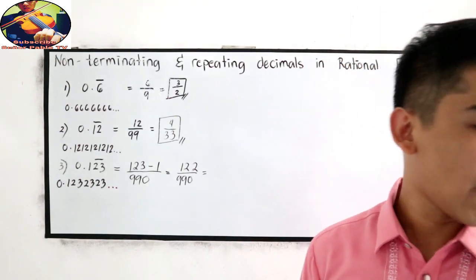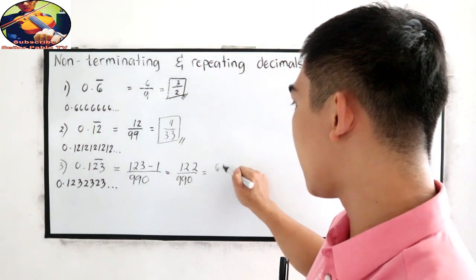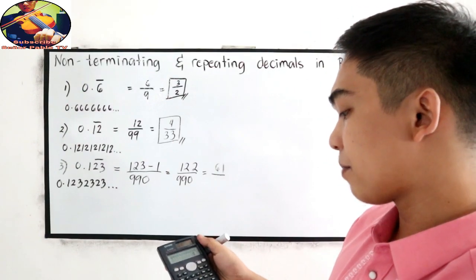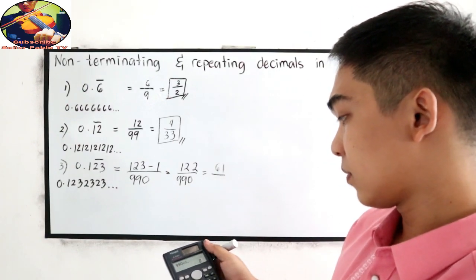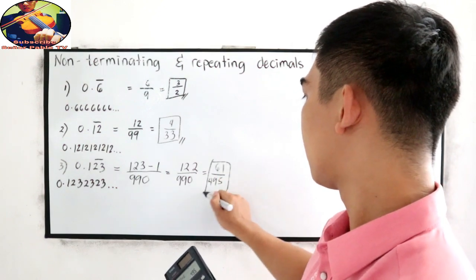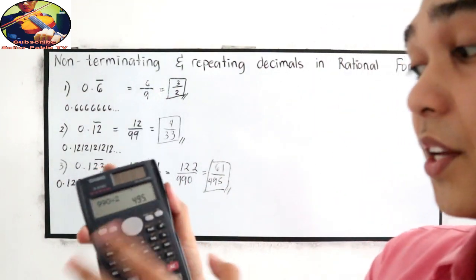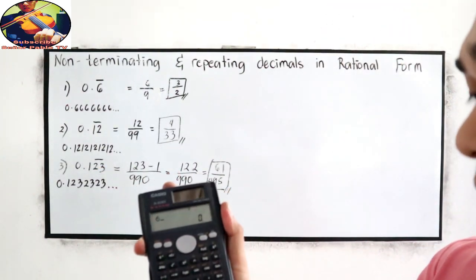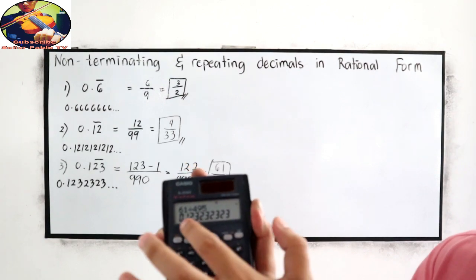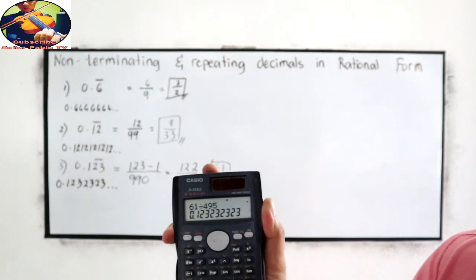122 over 990 is divisible by 2, giving us 61 over 495. Let us check using our calculator: 61 divided by 495 equals 0.123232323232323. Correct.